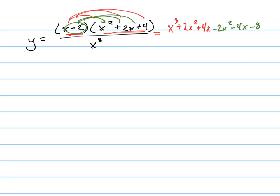Continuing now. And then that's all, of course, over x cubed. Now when I add the like terms, those will cancel and those will cancel. So actually all I'm going to have is x cubed minus 8 all over x cubed.